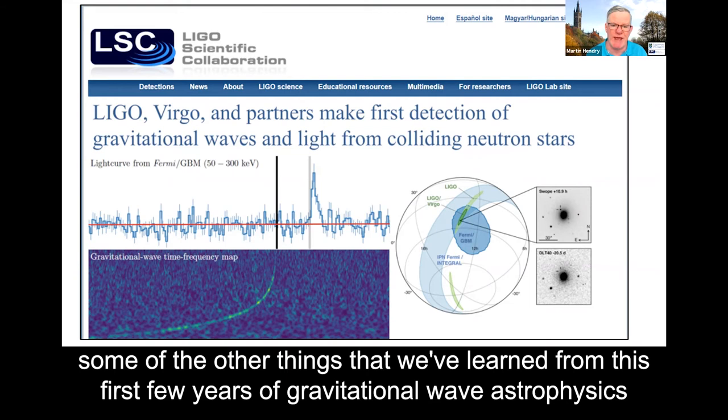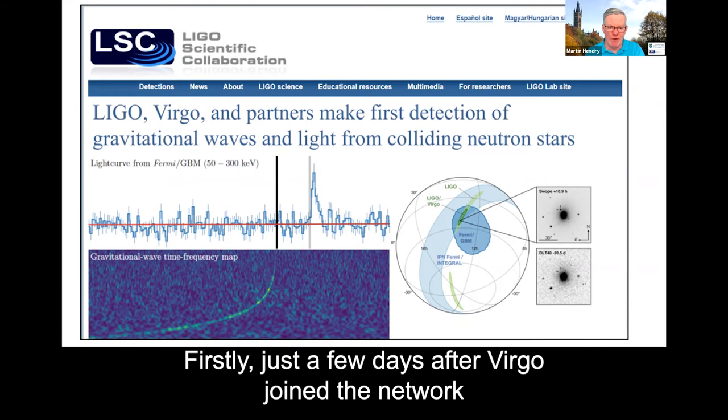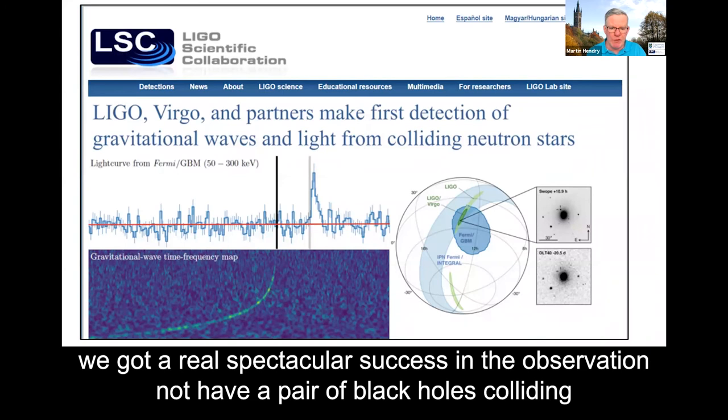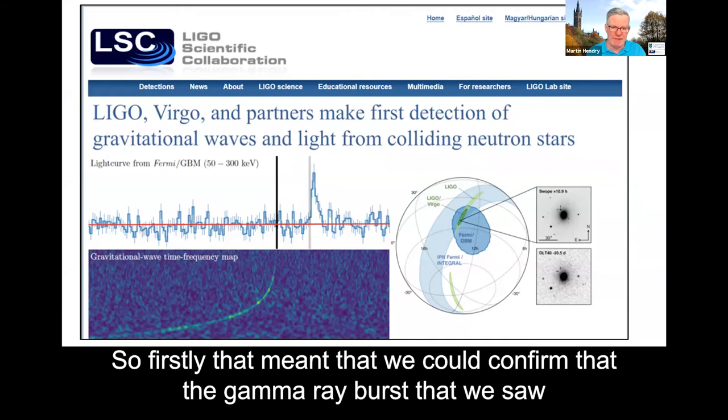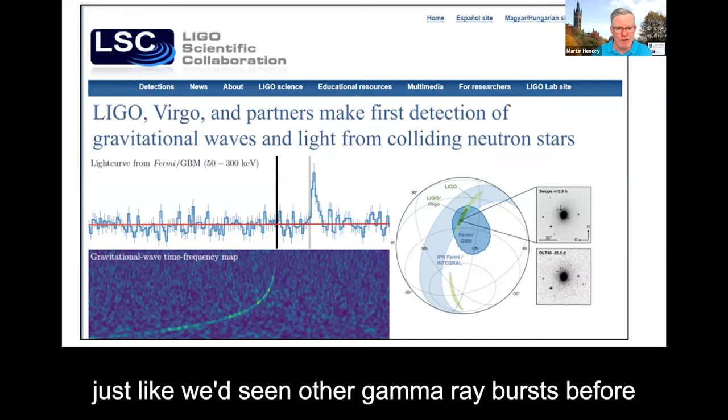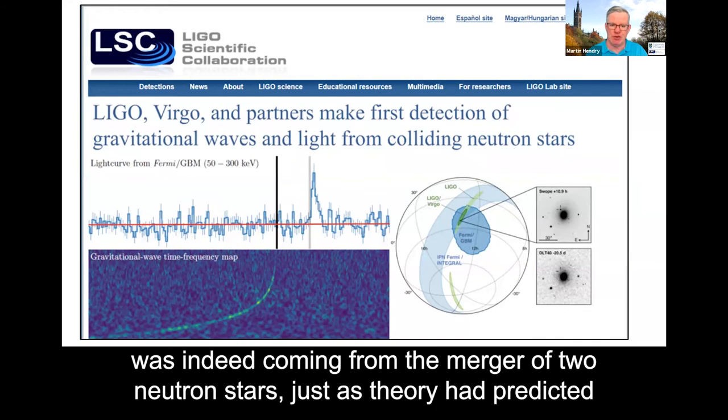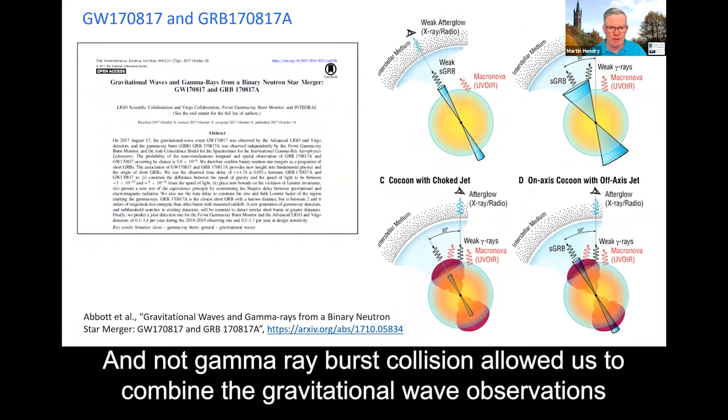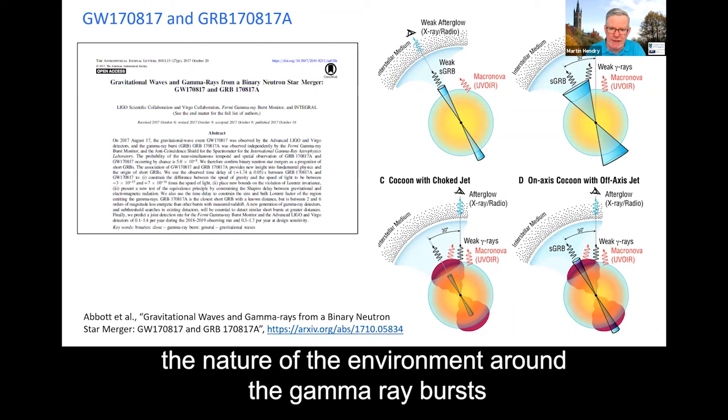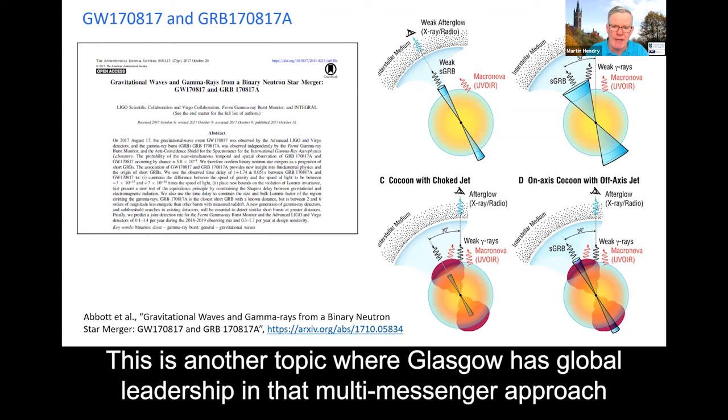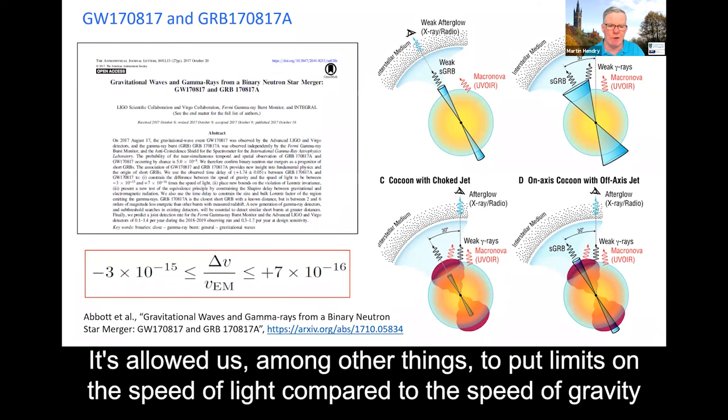So let's just wrap things up in the next few minutes by just highlighting some of the other things that we've learned from this first few years of gravitational wave astrophysics. So firstly, just a few days after Virgo joined the network, we got a real spectacular success in the observation, not of a pair of black holes colliding, but a pair of neutron stars. And why that was so significant is that it was accompanied by electromagnetic observations across the whole spectrum. So firstly, that meant that we could confirm that the gamma ray burst that we saw, just like we'd seen other gamma ray bursts before, was indeed coming from the merger of two neutron stars, just as theory had predicted. And that gamma ray burst collision allowed us to combine the gravitational wave observations and the electromagnetic observations to begin to gain insights about the nature of the environment around the gamma ray burst. This is another topic where Glasgow has global leadership in that multi-messenger approach to combining observations. It's allowed us, among other things, to put limits on the speed of light compared to the speed of gravity.